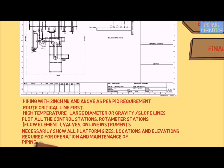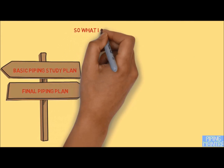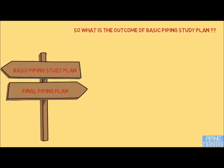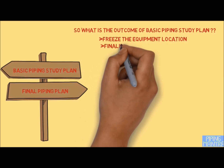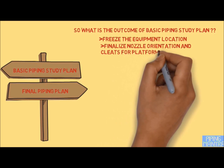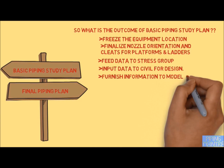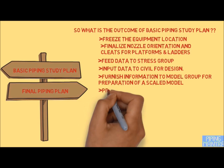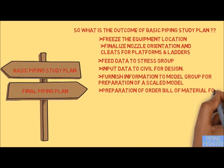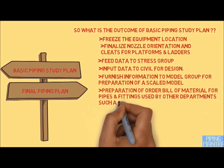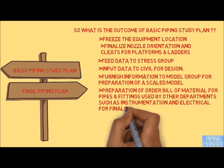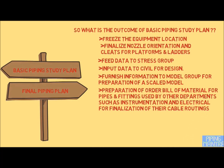The piping layout should necessarily show all equipment location, orientation, platform size, location, and elevation required for operation and maintenance. The outcomes of the basic piping plan include freezing equipment locations, finalizing nozzle orientation, clip information for platforms and ladders associated with equipment, feeding data to the stress group for thermal analysis, and furnishing top-of-foundation elevation and related data to civil for design.